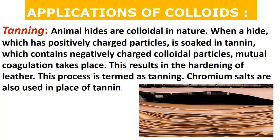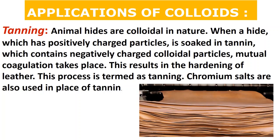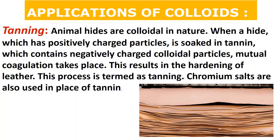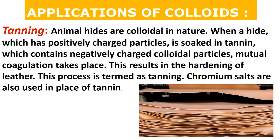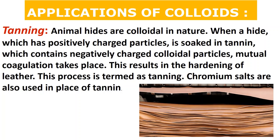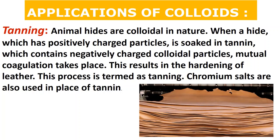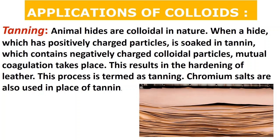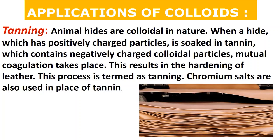In tanning of leather, animal hides are colloidal in nature. The positively charged colloidal particles in animal skin are placed in a tanning solution containing negatively charged colloidal particles. Mutual coagulation occurs between the oppositely charged colloids — similar to the coagulation method we studied — resulting in the hardening of leather. This process is called tanning. Chromium salts can also be used instead of tannin. The goal is to coagulate the positively charged hides so the leather becomes applicable for making shoes, bags, and more.